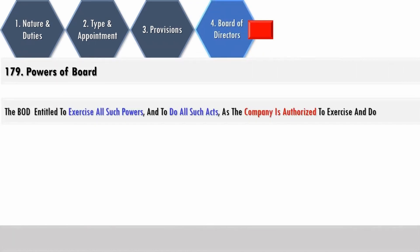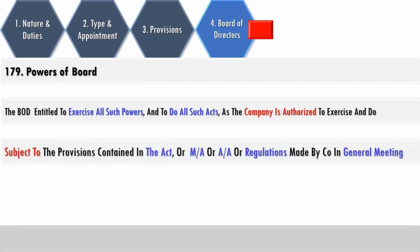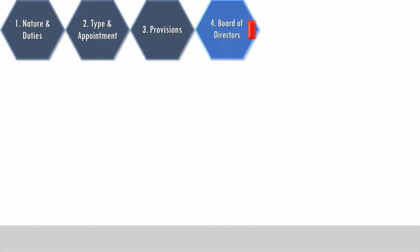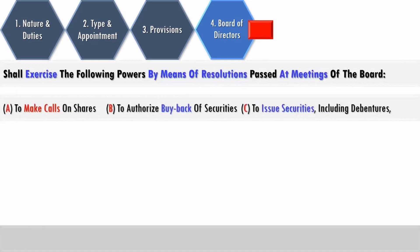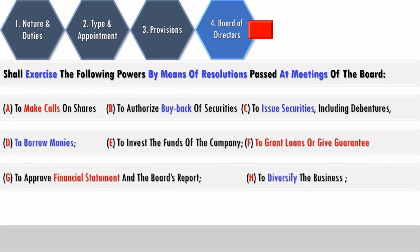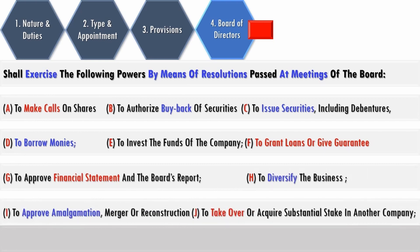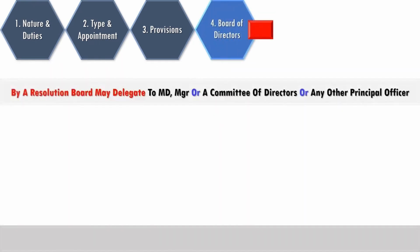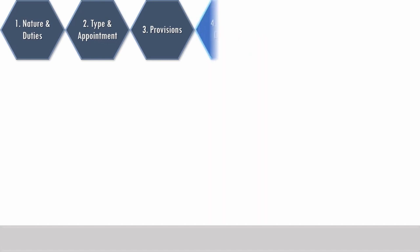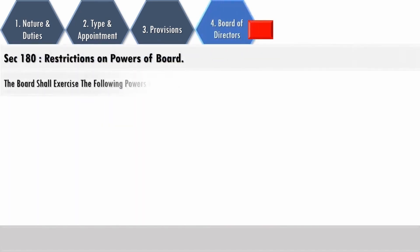The board of directors has wide powers to exercise all such powers and to do all such acts as the company is authorized to do, subject to provisions contained in the articles, Act, memorandum, or regulations made by the company in a general meeting. The board shall not exercise any power required to be exercised by the company in a general meeting. The board has wide powers exercisable in its meetings by resolution: to make calls, authorize buyback, issue securities, borrow monies, invest funds, grant loans or give guarantees, approve financial statements and board's report, diversify business, approve amalgamation, merger or reconstruction, and take over or acquire a substantial stake in another company. The board may by resolution delegate to the MD, manager, or a committee of directors or any other principal officer three powers: to borrow monies, invest the funds of the company, and grant loans or give guarantees, subject to specified limits.